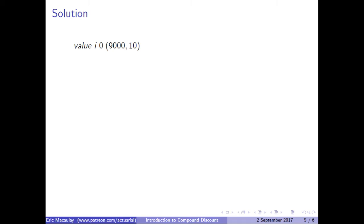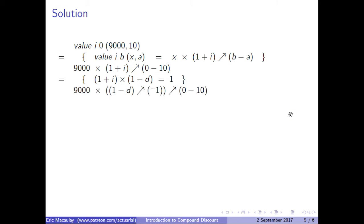Value i 0 at (9000, 10) using the definition of value equals 9000 times (1 + i) to the power of (0 - 10). Substituting for (1 + i), since (1 + i) equals 1 divided by (1 - d), we get 9000 times (1 - d) to the power of negative 1, all to the power of (0 - 10).